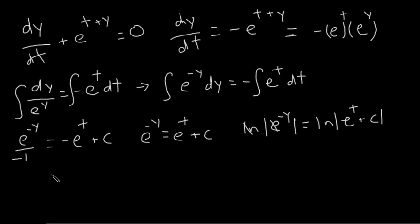So that gives us negative y equals natural log of e to the t plus c. And we still need our absolute values because if c were negative, then even though this can't be negative, within the expression it could be negative. So we need to keep those absolute values. And then our final answer, we're just going to multiply by negative one to get our y.